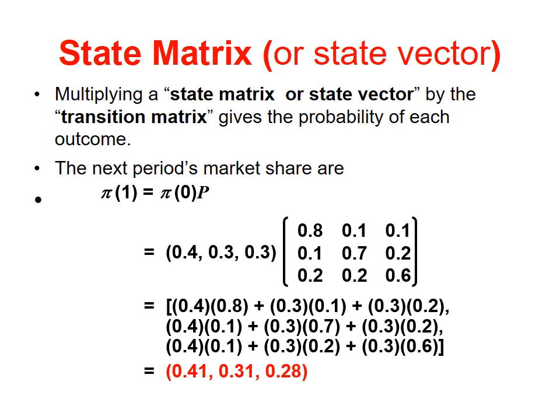Multiplying a state vector by the transition matrix gives the probability of each outcome. The next period's market share is: vector 1 equals vector 0 (the current state) times B, which represents the transition matrix.